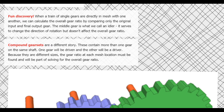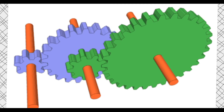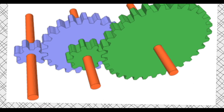Often we use compound gear sets, where a shaft has two gears of different sizes on it. With compound gears, we can't just look at the start and finish because we're changing things on each shaft. Here we have three shafts. On shaft B, there are two gears — that's a compound gear. It's a classic compound gear set.